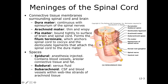Quickly on meninges — we also touch on this in chapter 13. We have connective tissue membranes that cover the spinal cord and our brain. There are three major ones. We have our dura mater — dura means tough, mater means mother — so this is the tough mother on the outer periphery, and it really helps to protect the spinal cord and brain.